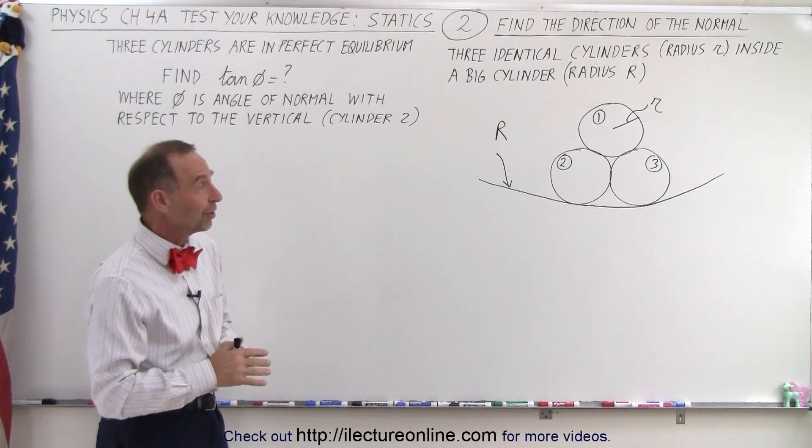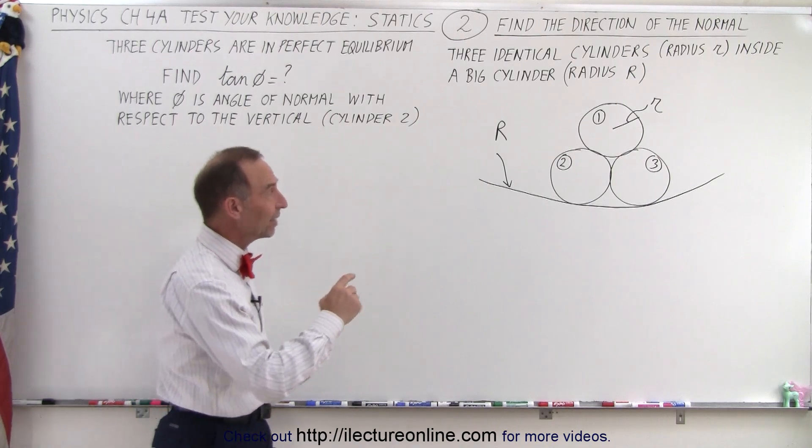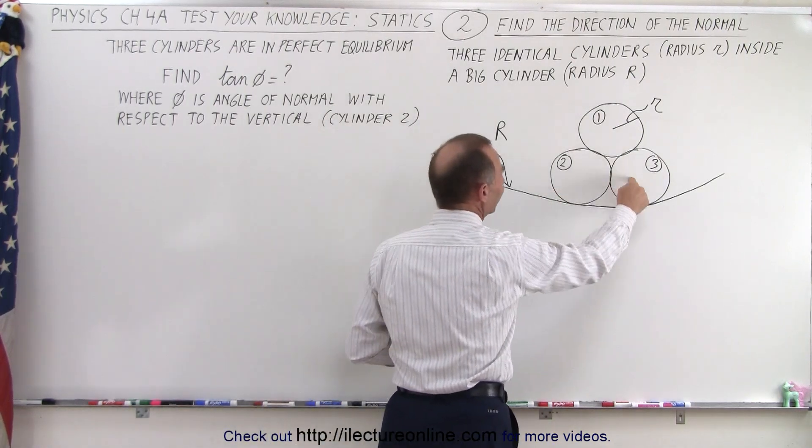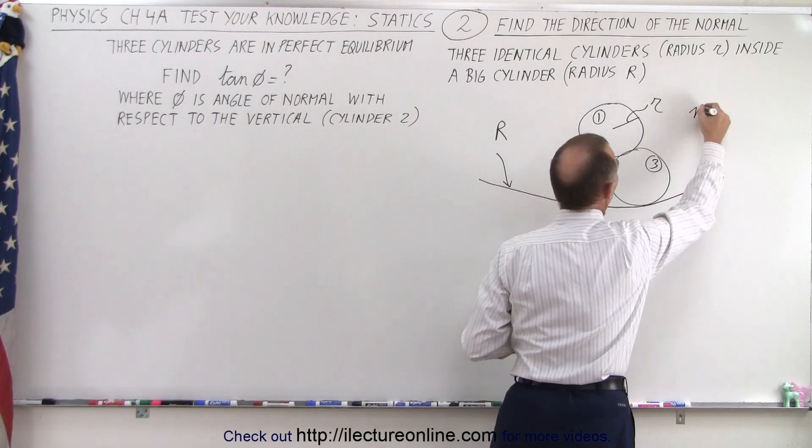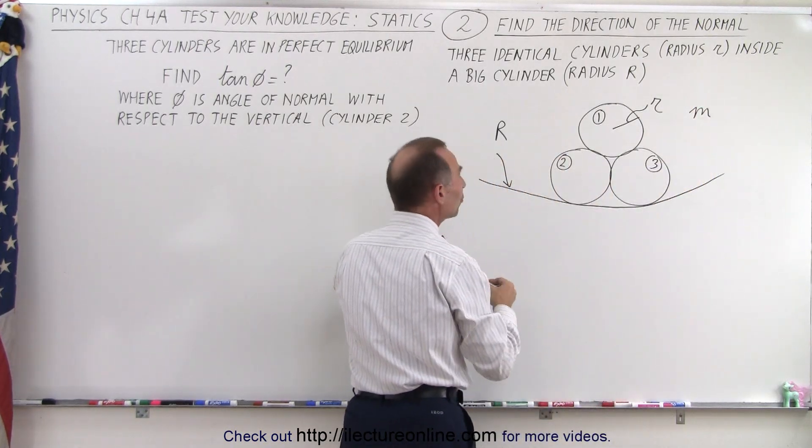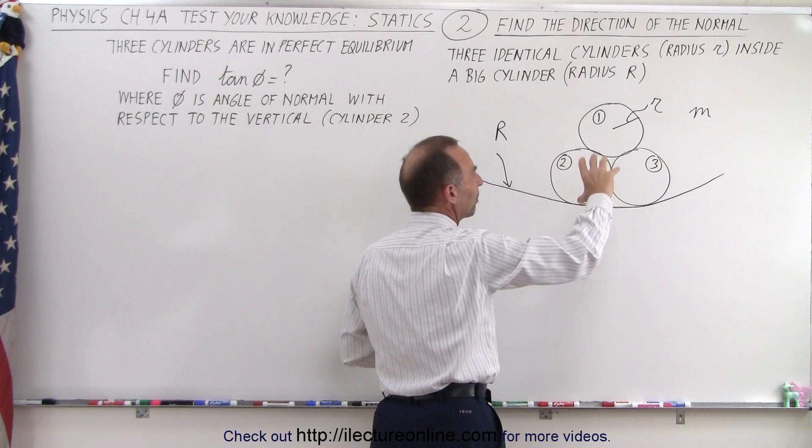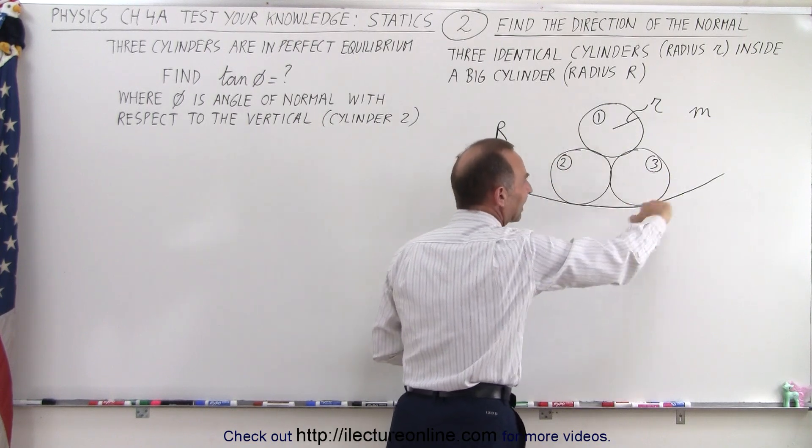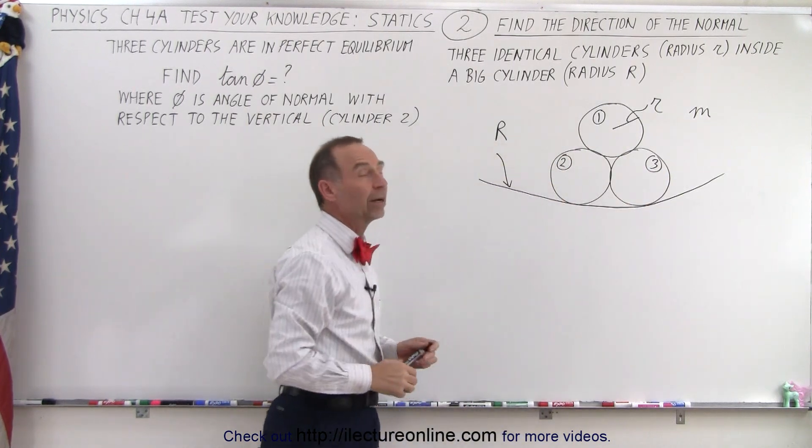What we have in front of us is three identical cylinders, each with mass M and each with radius R, which are situated parallel to each other inside a bigger cylinder with radius big R.